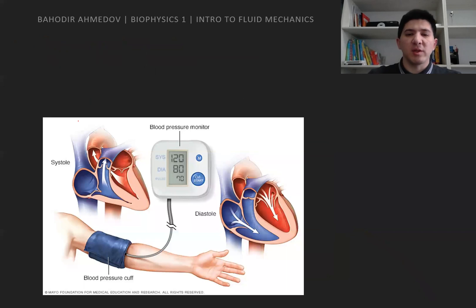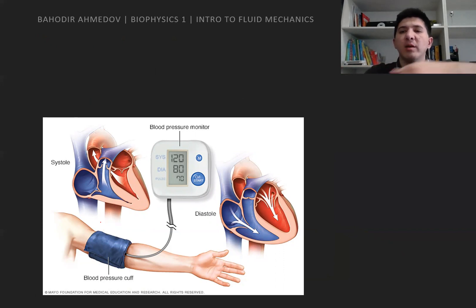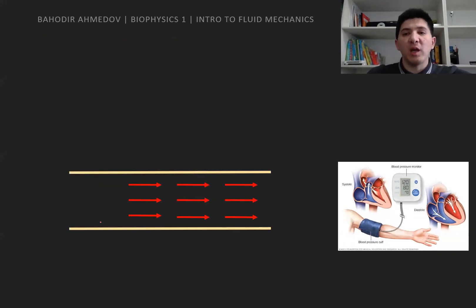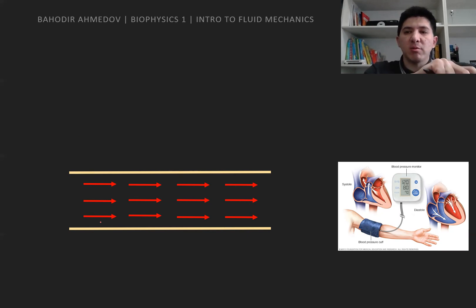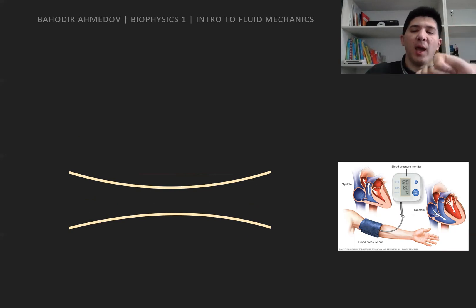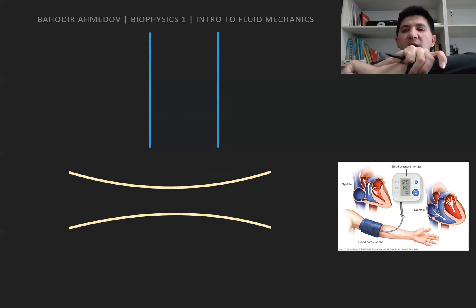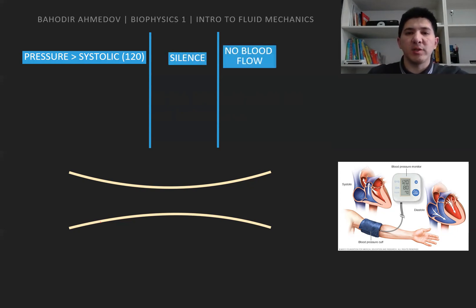Let's look at how we typically measure blood pressure. We put a cuff on part of your arm and apply pressure. We consider the part of your hand where blood streamlines flow as laminar flow. When we stress the cuff so high that there is no flow at all — if the cuff pressure is even higher than the systolic pressure — we don't hear anything because there is no flow. There is silence and no blood flow at all.